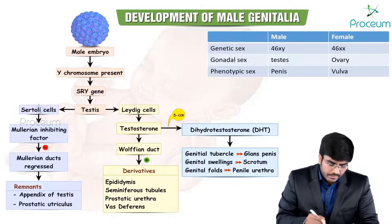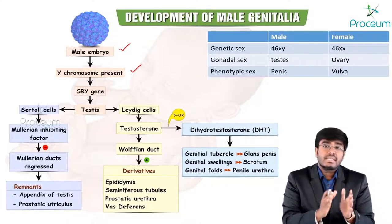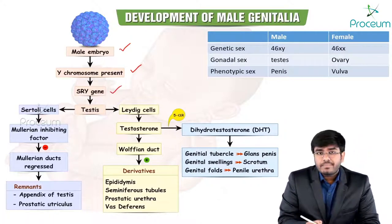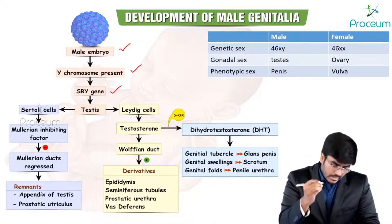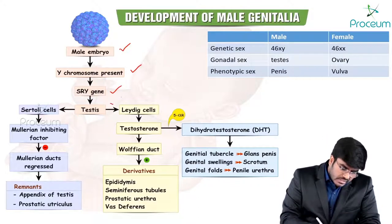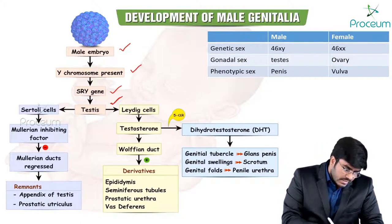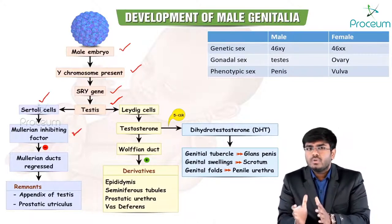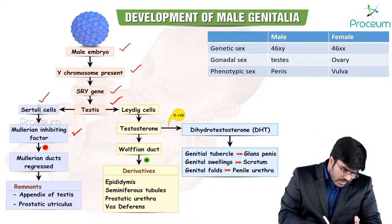Let's start with the development of male genitalia. In a male embryo, there is presence of the Y chromosome — males are XY. Because of the Y chromosome, there is the SRY gene, also known as the testis-determining factor. This SRY gene codes for the development of the testis. In testicular tissue, there are Sertoli cells, and these Sertoli cells produce Müllerian Inhibiting Factor (MIF).